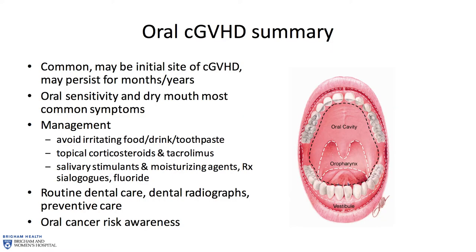This is a summary slide. Graft-versus-host disease in the mouth is common — it may be the initial site of GVHD and may persist for months if not years after it first presents. Oral sensitivity and dry mouth are the most common symptoms. Management is largely driven by the type and intensity of symptoms. Basic management includes avoiding irritating foods and drinks, finding a tolerable toothpaste — generally any children's toothpaste — the use of topical immunomodulatory agents like corticosteroids and tacrolimus for mucosal disease, and various salivary stimulants, moisturizing agents, prescriptions, and fluoride for managing salivary gland disease. The importance of routine dental care and dental radiographs — don't be worried about radiation from dental radiographs, it's nothing compared to what we all get exposed to daily. Good preventive care and being aware of the risk of cancer.